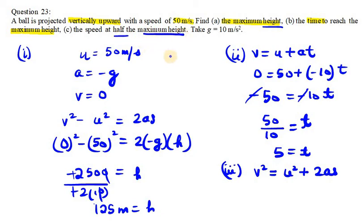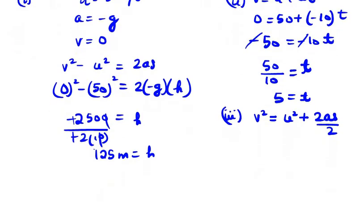So here at half the maximum height, what you need to do is divide the third term with 2. So we have v² = u² + 2as/2. So 2 and 2 gets cancelled out, we are left with v² = u² + as.